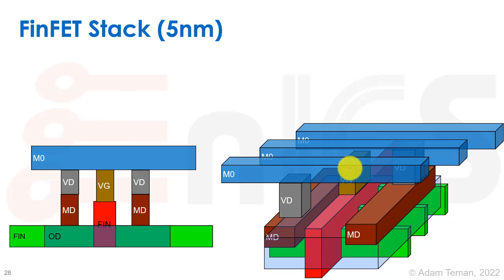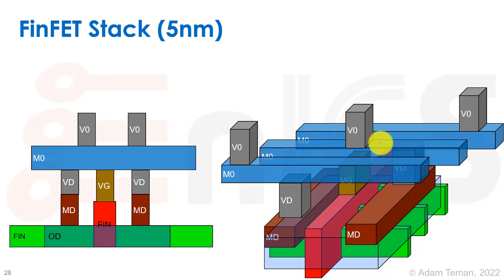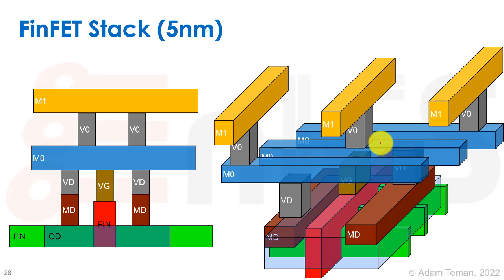The metal zero layer, as you see, is unidirectional — it can't be broken and can't have any jogs. Then we have via zero, which goes up to metal one. Metal one is also probably one of these layers that cannot be broken at all — it's only unidirectional. Maybe higher than that we'll have fewer constraints.